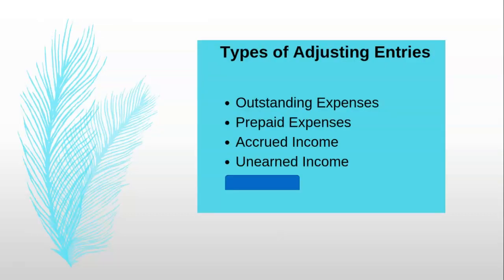These are some of the adjustment entries which we pass. We shall discuss outstanding expenses, prepaid expenses, accrued income, and unearned income.